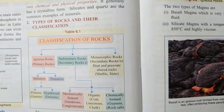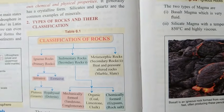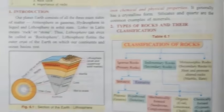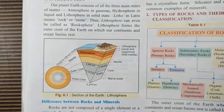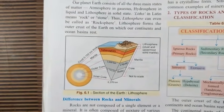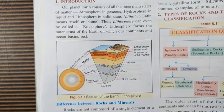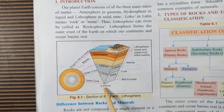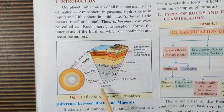Now let's start with the first rock — igneous rocks. But before we start, I would like to show you one figure: a cross-section of the earth and the lithosphere, as you can see on your screen. Here you can find the different layers of the earth.